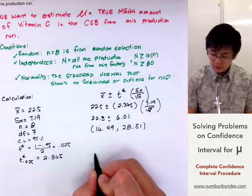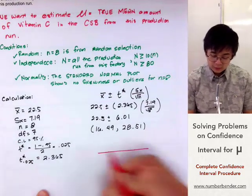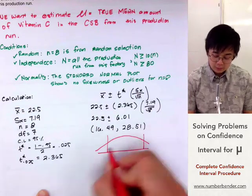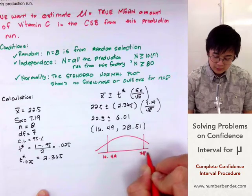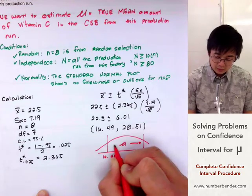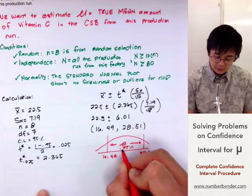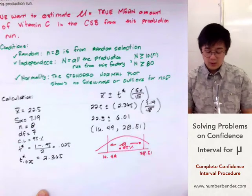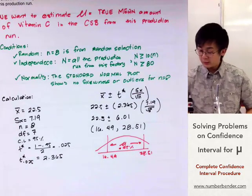And to illustrate this confidence interval using a normal curve, since we know that the sample is normal, our population parameter will be in between 16.49 and 28.51. So mu is somewhere here at 95% confidence level. And that will be our illustration.